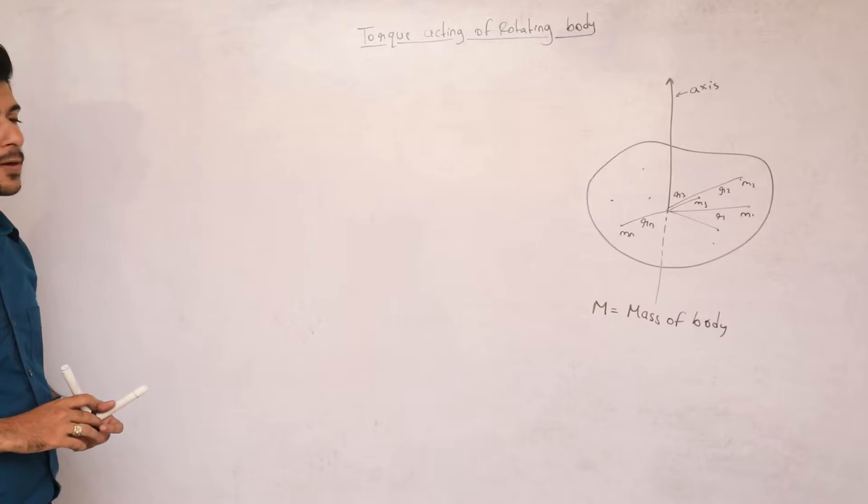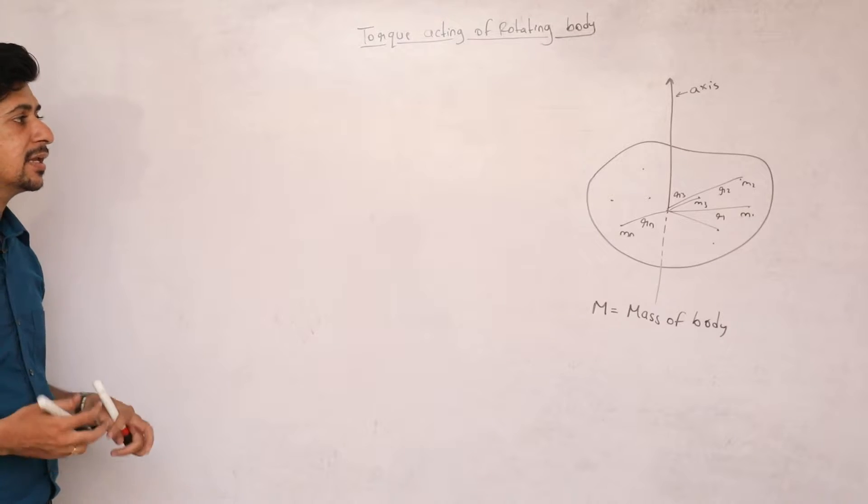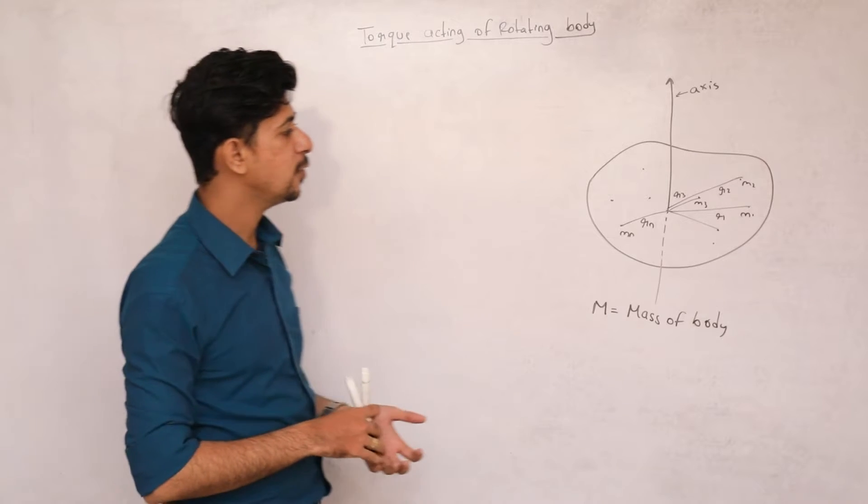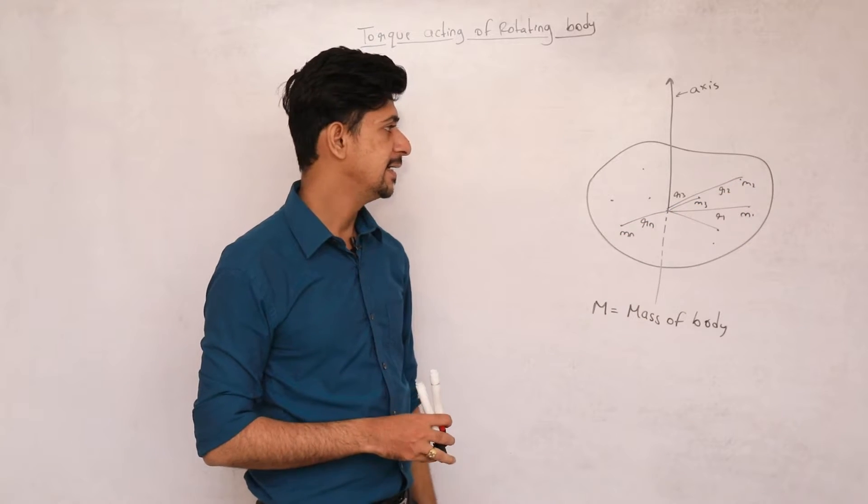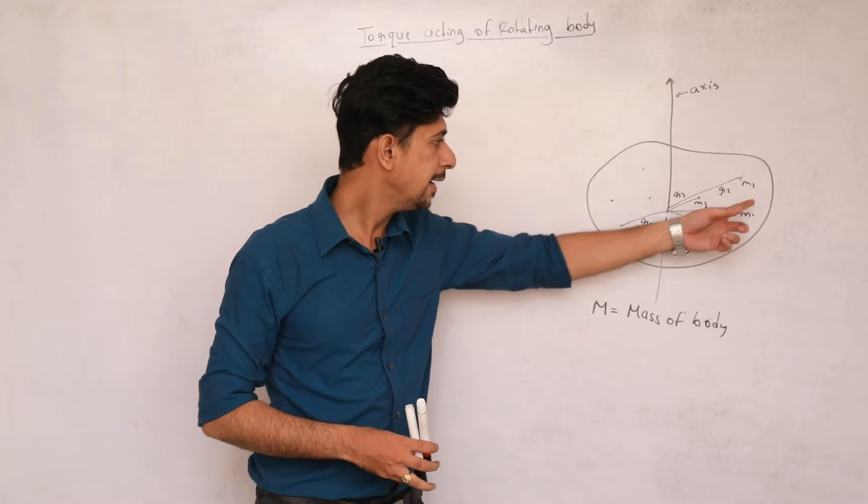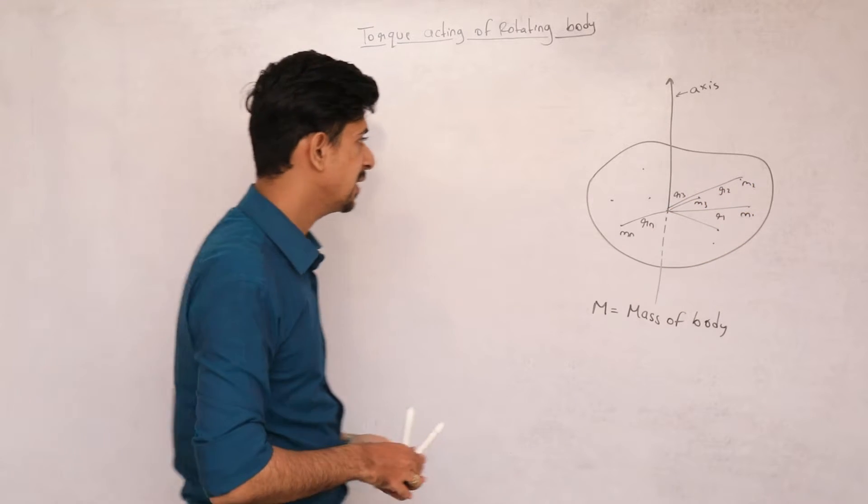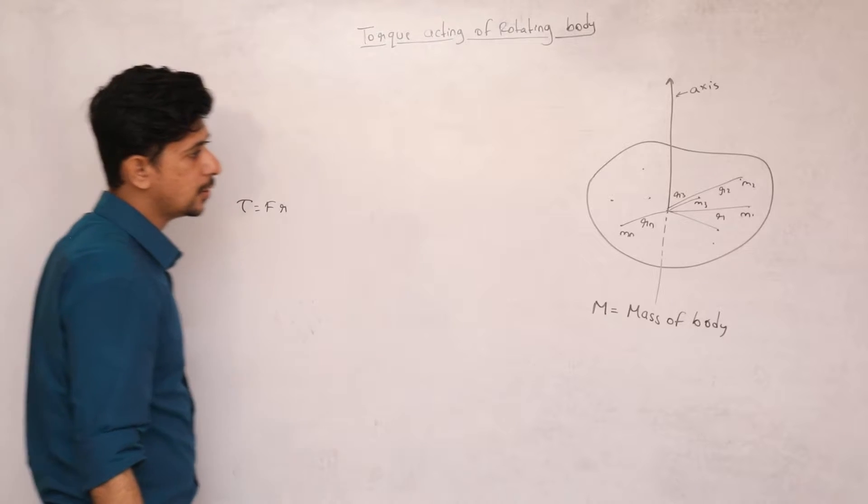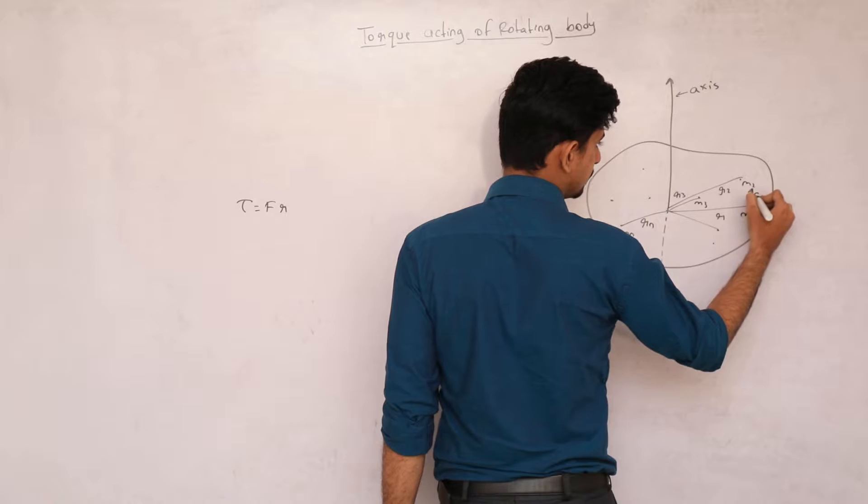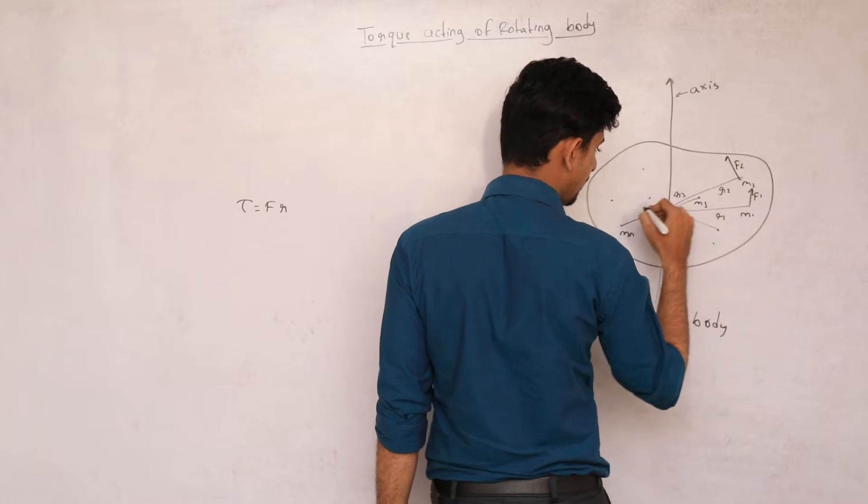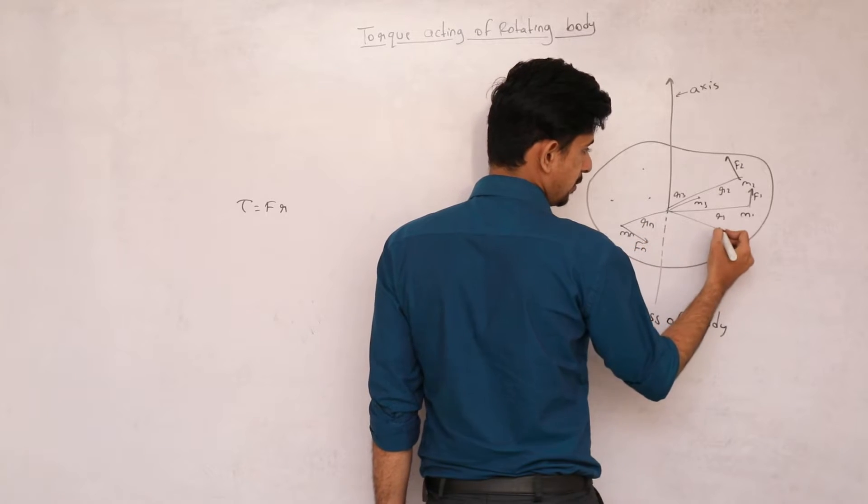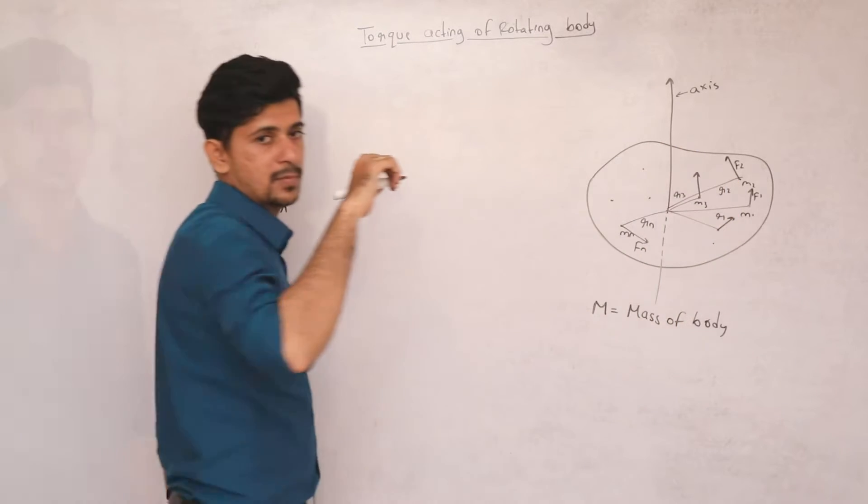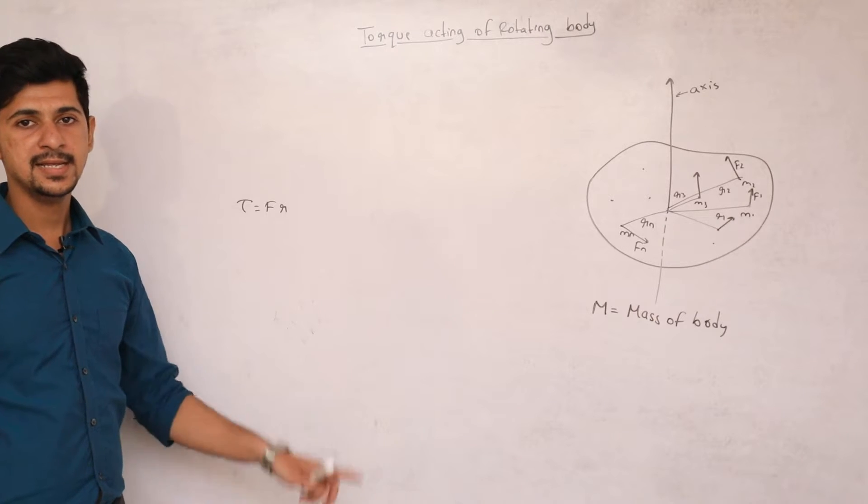We need to figure out torque acting on a rotating body. Torque changes the body's momentum. It is very obvious that if you put force on the body, the entire particle can experience different forces because we talk about force into radius, right? So each particle can experience a different force, because the body can move so the body can be at different positions.